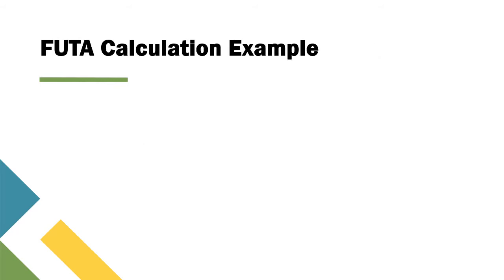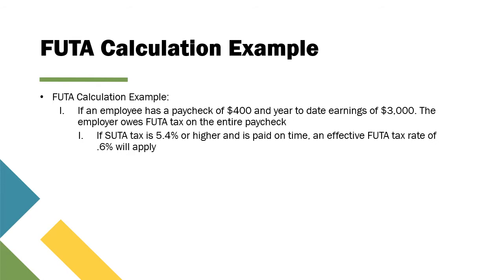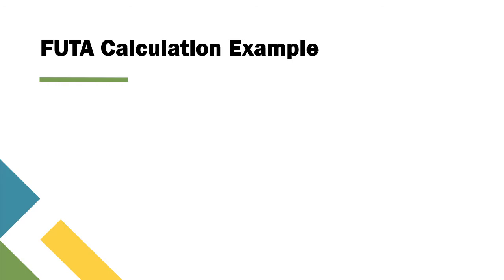Here is a FUTA calculation example. If an employee has a paycheck of $400 and year-to-date earnings of $3,000, the employer owes FUTA tax on the entire paycheck. If SUTA tax is 5.4% or higher and is paid on time, an effective FUTA tax rate of 0.6% applies. In this case, FUTA tax would be $2.40, which is $400 times 0.6%.